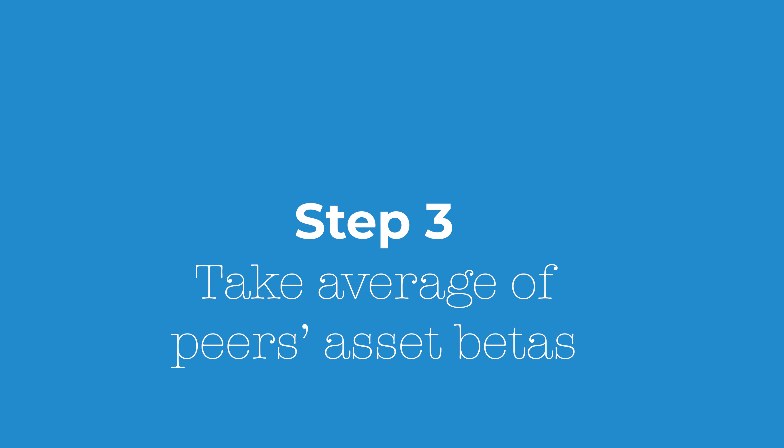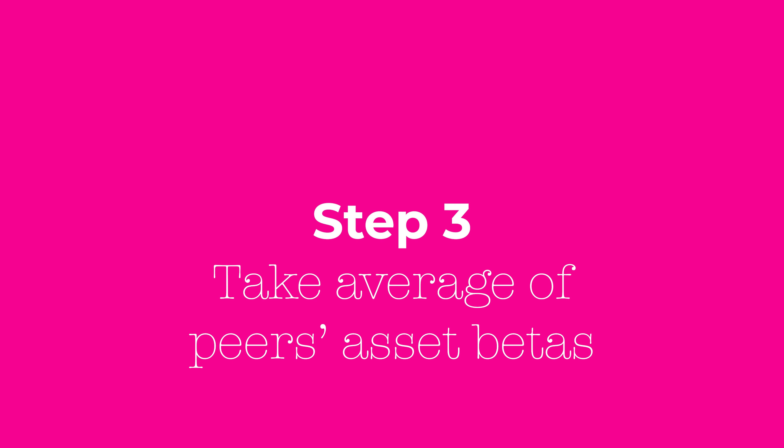If you look at the industry — company A, B, C, D — you take the mean or the median and you get what is the average asset beta of your peers.